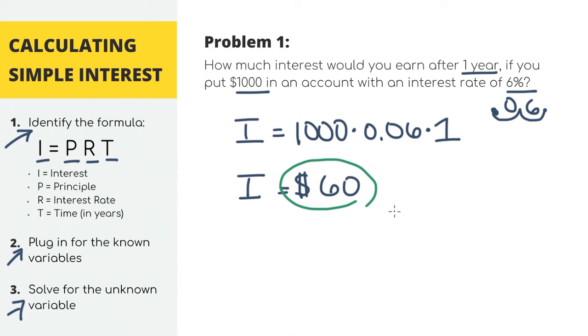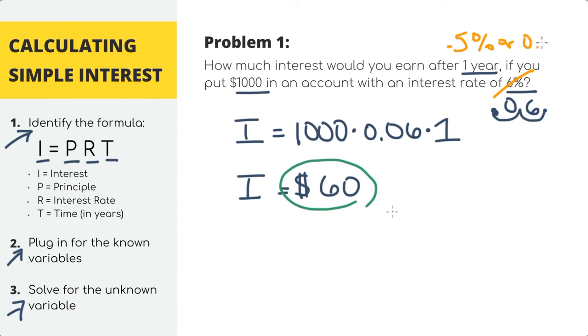Unfortunately, all these math problems you usually see are lying to you because in the real world, the interest rate is a lot lower. The very highest interest rates you can usually find is around 0.5%. So if we were to calculate our interest earned using the more realistic rate of 0.5%, we'll actually get that our interest is only $5 for the entire year. So it's not that easy getting free money.